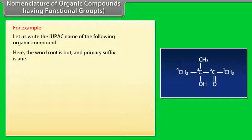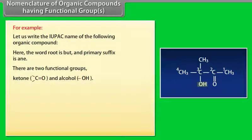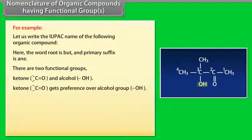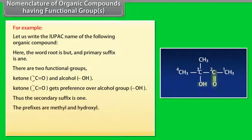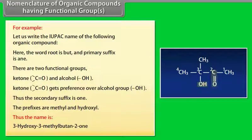Here, the word root is BUT- and the primary suffix is -ANE. There are two functional groups: ketone and alcohol. Ketone gets preference over the alcohol group. Thus, the secondary suffix is -1 (one). The prefixes are methyl and hydroxyl. Thus, the name is 3-hydroxy-3-methylbutane-2-one.